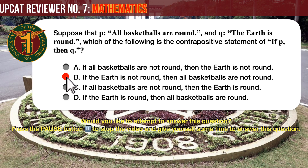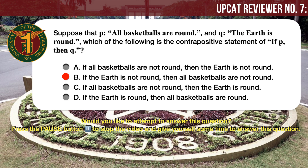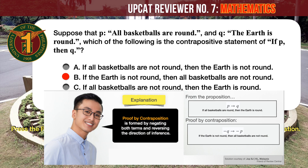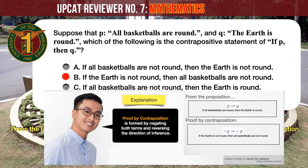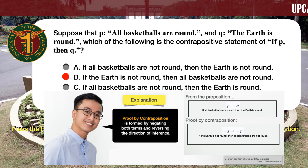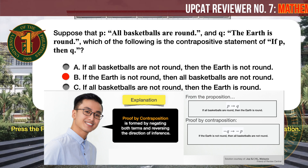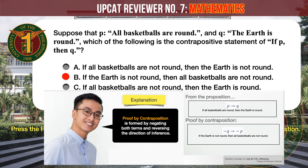The correct answer is B. The contrapositive statement of 'if P, then Q' is 'if the earth is not round, then all basketballs are not round.' The contrapositive statement is formed by negating both terms, P and Q, and reversing the direction of inference. So to find the contrapositive, first we negate both statements: 'all basketballs are round' becomes 'all basketballs are not round,' and 'the earth is round' becomes 'the earth is not round.'